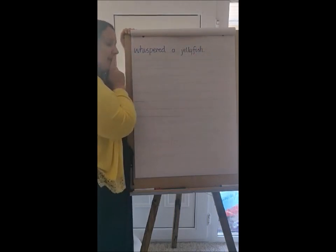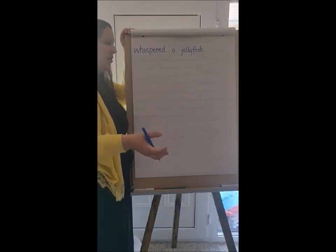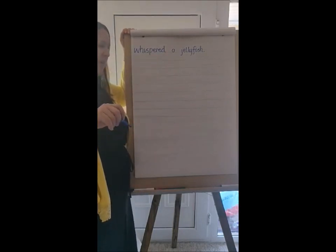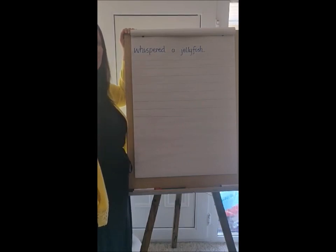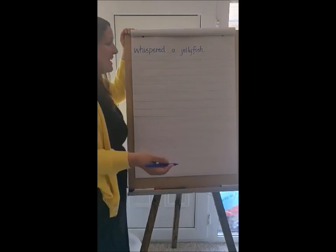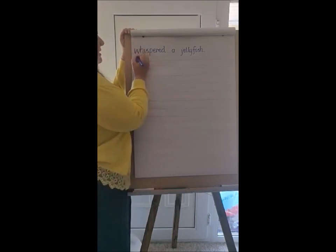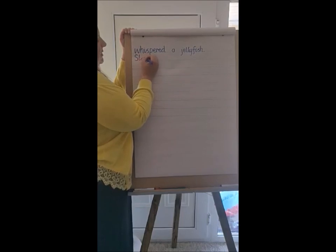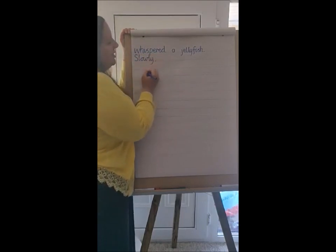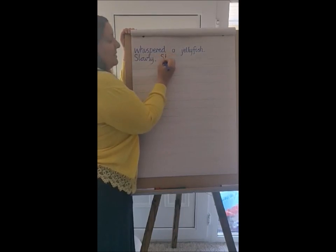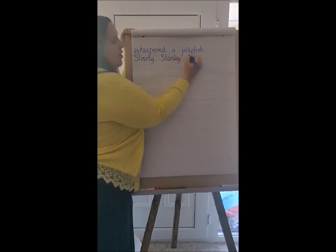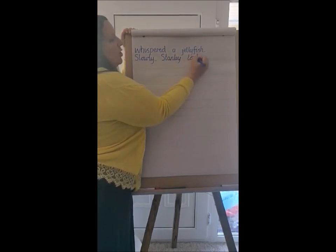What next? Stanley is going to look around — he doesn't really know where he is. I'll start with an adverb: 'Slowly.' That's a nice adverb to start my sentence. 'Slowly Stanley looked' — with capital S because it's his name. 'Slowly Stanley looked around' — I need to finish this with a description of his eyes.